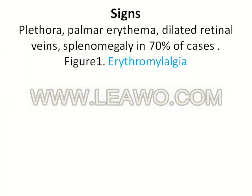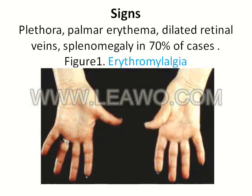Signs: the patient is usually plethoric with palmar erythema, dilated retinal veins, and splenomegaly in 70% of cases. This figure shows erythromelalgia.